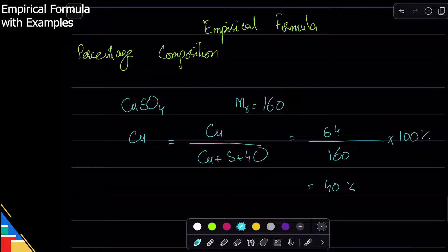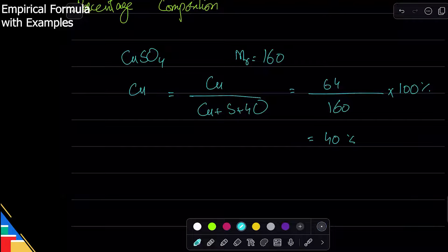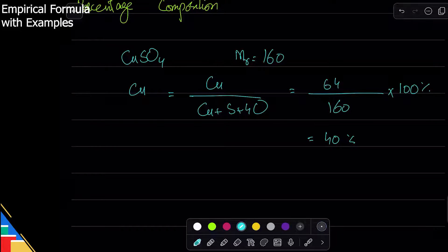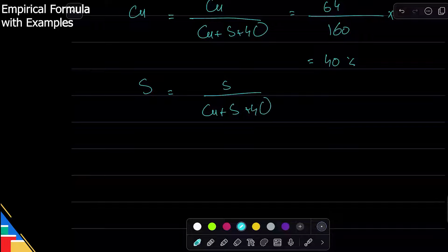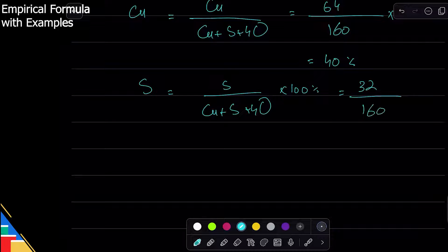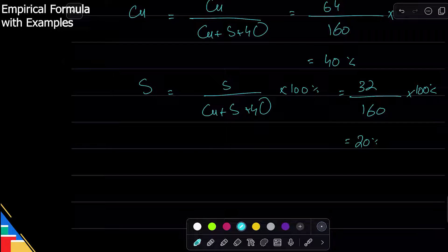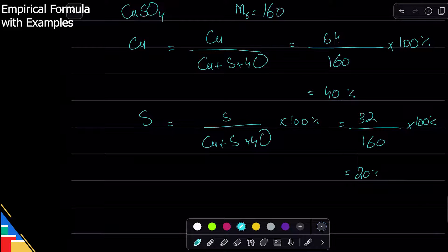What that means practically: if you found a rock made of this compound weighing two tons, you could extract 40% of two tons — 0.8 tons of copper. Knowing percentage composition is useful in metallurgy. Similarly, for sulfur: 32 divided by 160 times 100 gives 20%. So the compound is 40% copper, 20% sulfur, and the remaining 40% is oxygen.